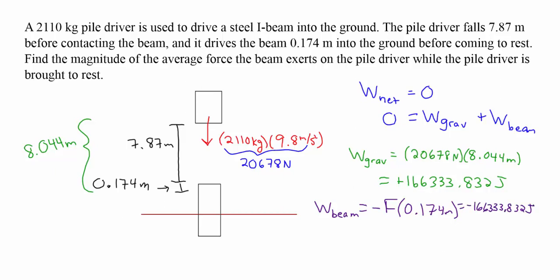We knew this because the work done by the beam plus the work done by gravity had to add up to equal zero. And so this allows us to solve for the unknown force F. This is the average force that the beam exerts. It might not be constant, but the average force that it exerts is the force needed to do negative 166,333.8 joules of work. And so that gives a force of the beam that's 955,941.563 Newtons.